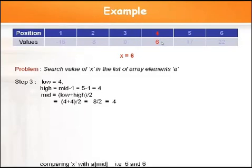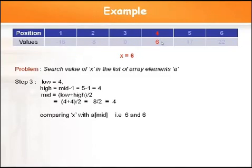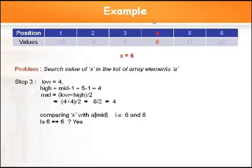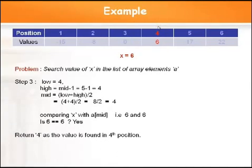Now compare X with A[mid]: 6 is equal to A[4], which is 6. Yes — the element is found! It is found at position 4, so we return the value 4. This is how a binary search algorithm works. Now let us start writing the algorithm for binary search.